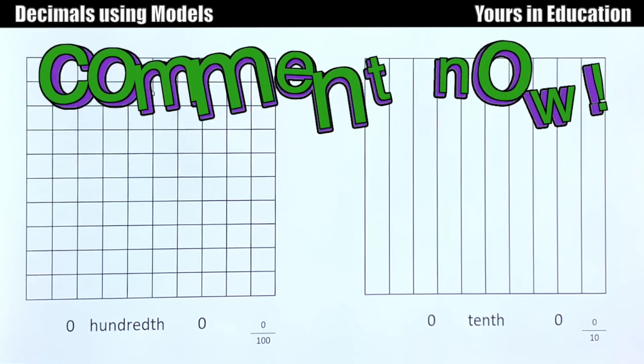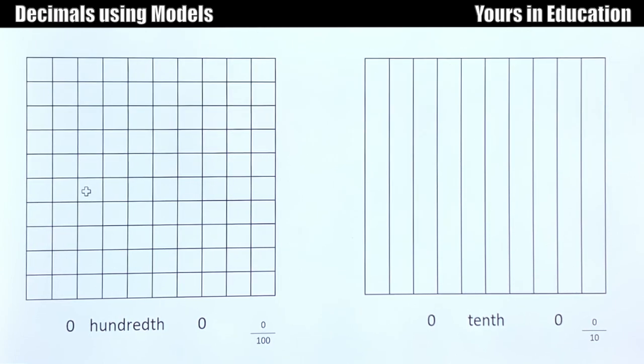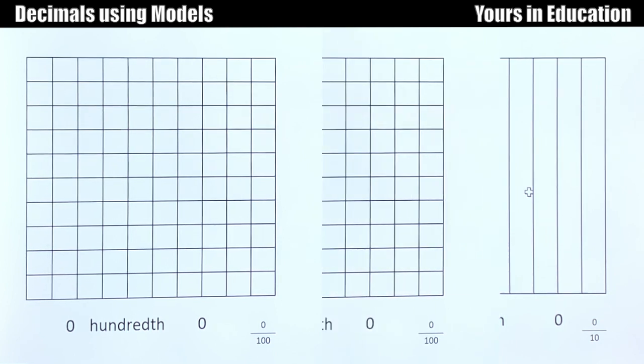If you said that this one on the left side is divided in 100 parts and the one on the right side is divided only in 10 equal parts, you are 100% right.